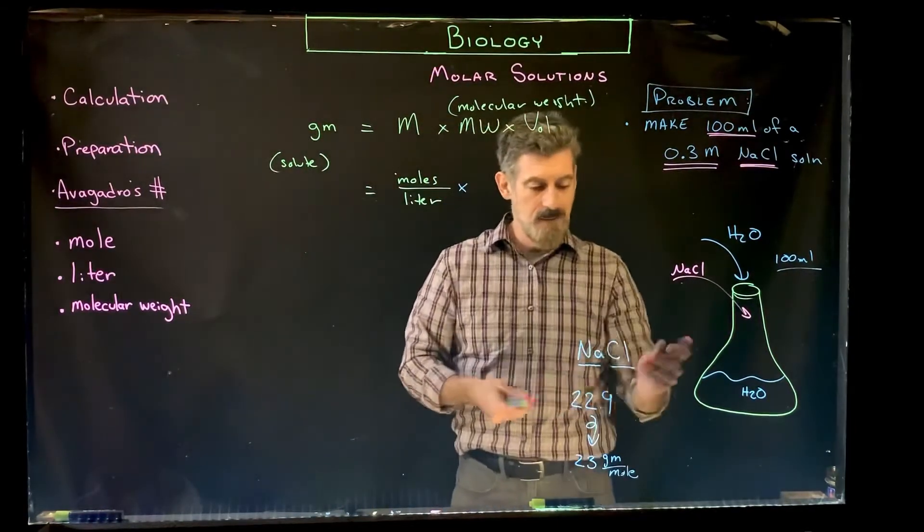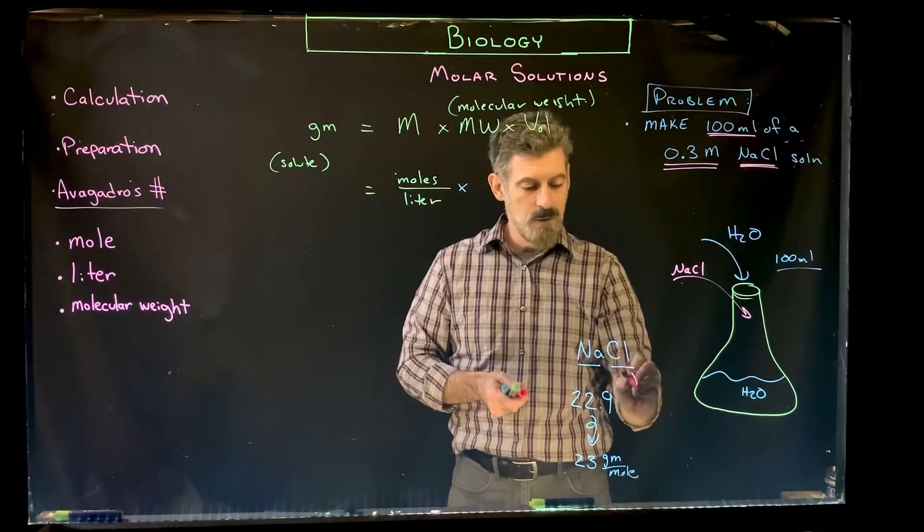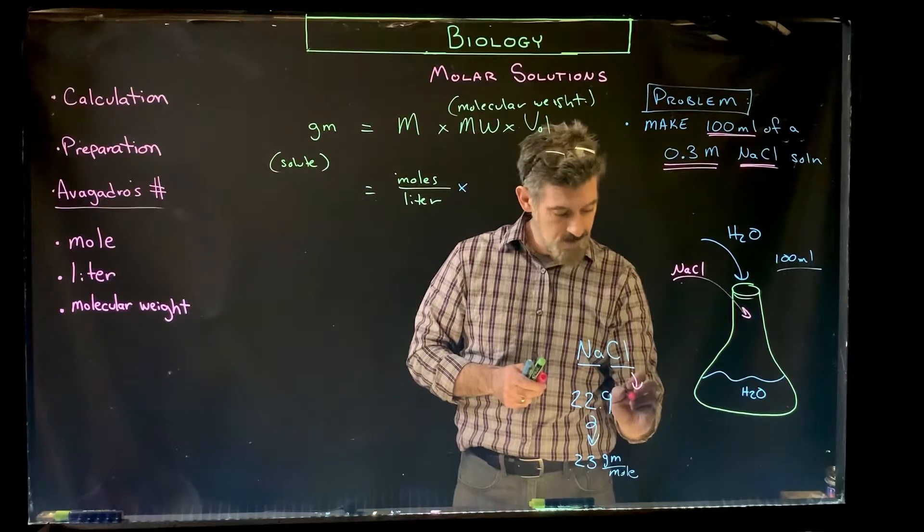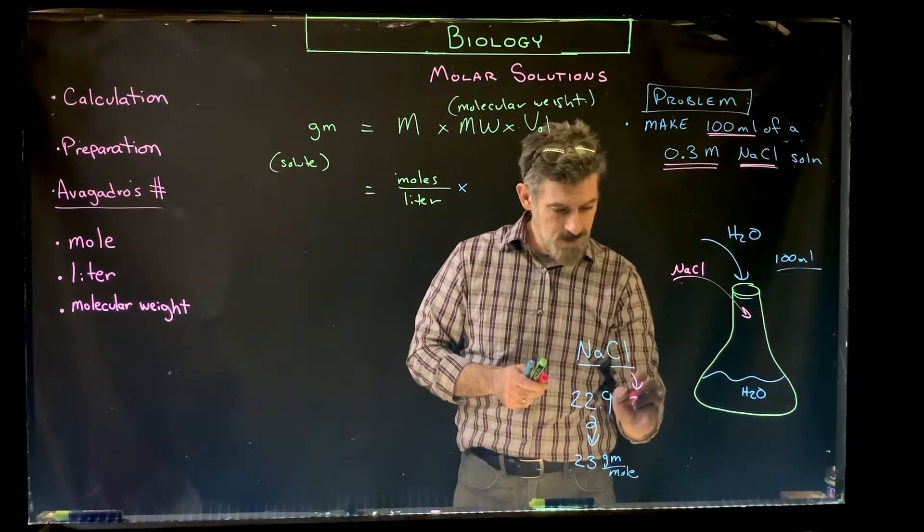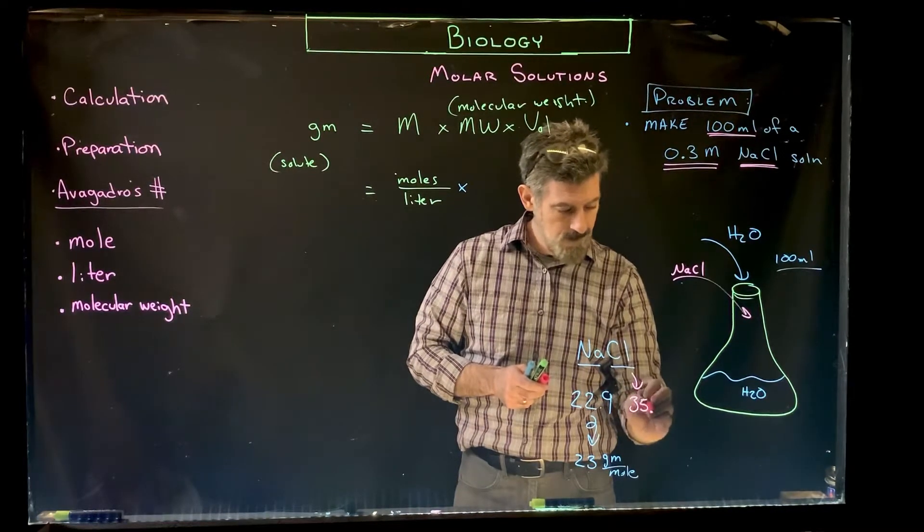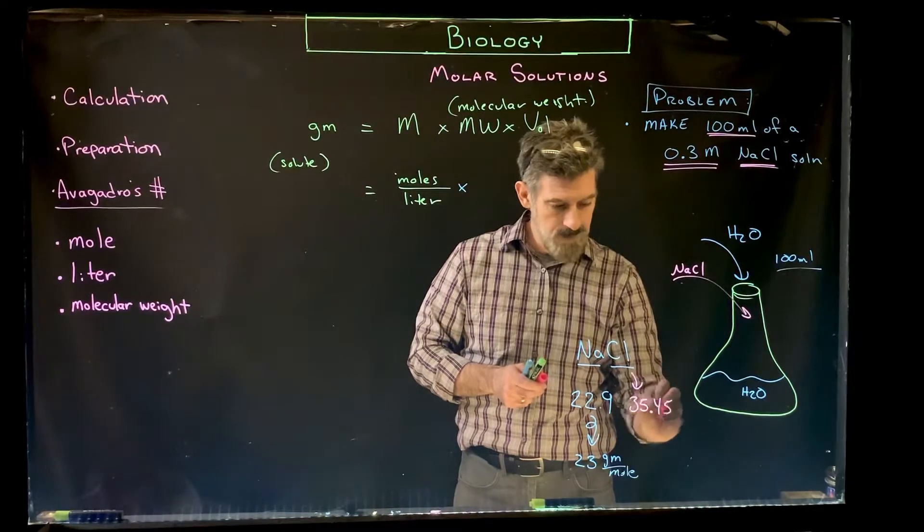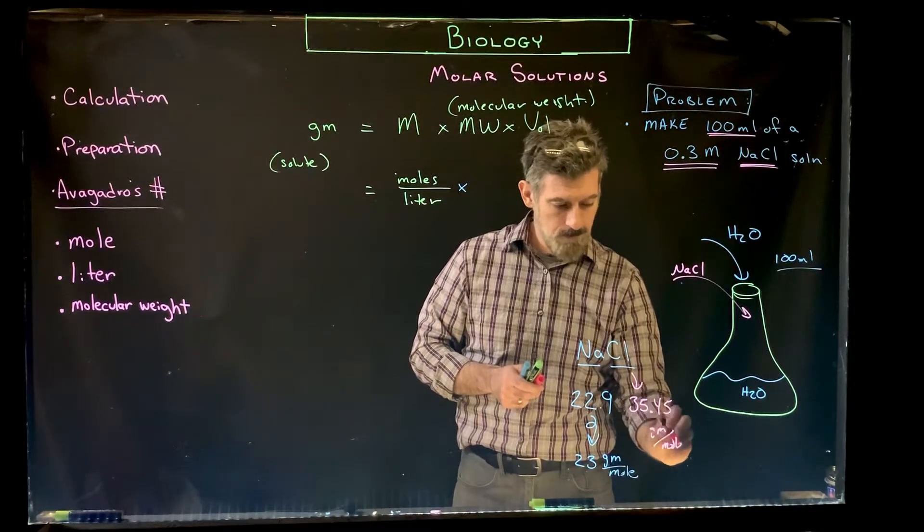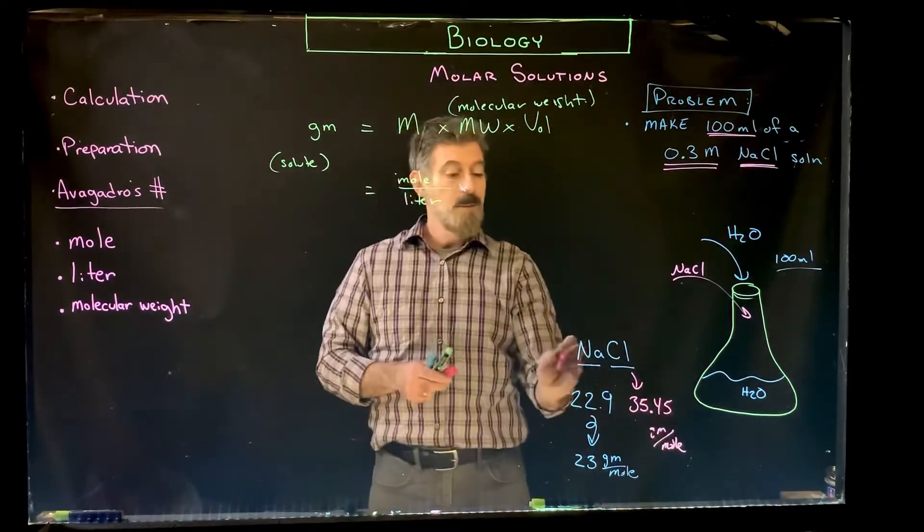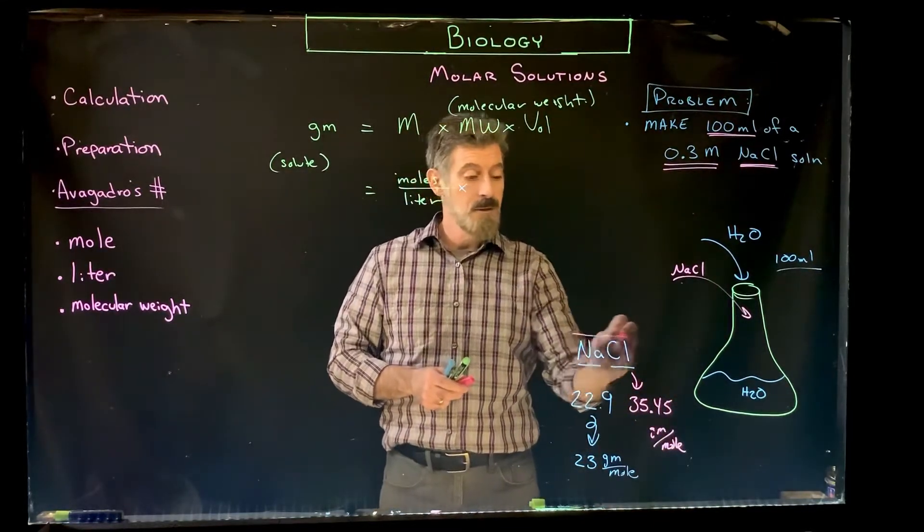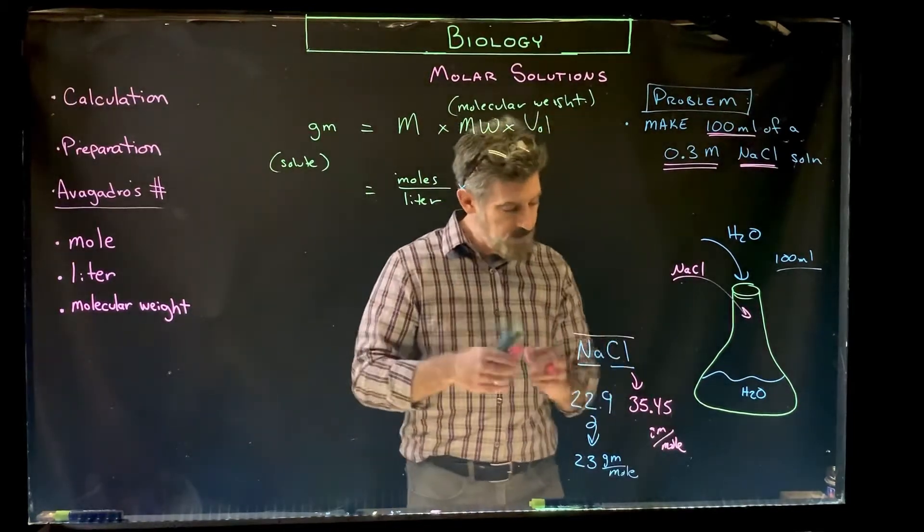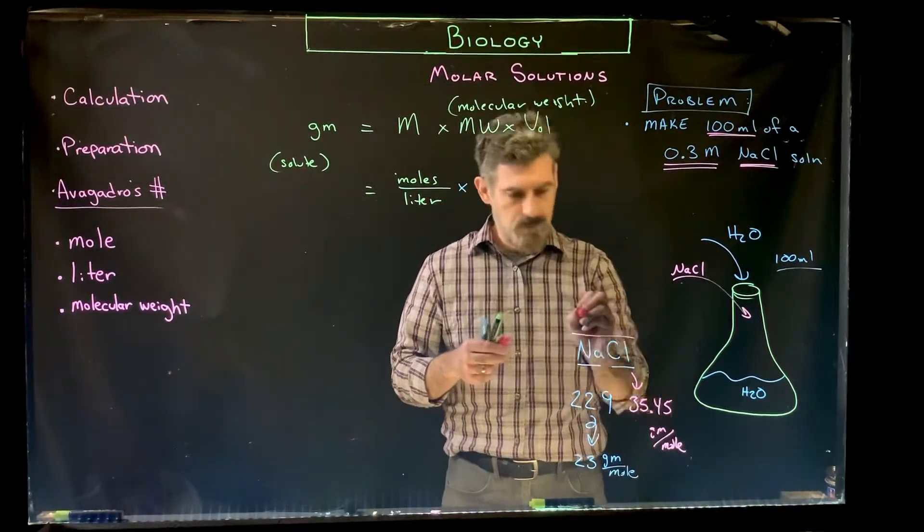But now let's say it's a molecule. There's two different types of elements here. There's also chlorine. Chlorine's atomic mass or atomic weight here is going to be 35.45. And that's the same thing, grams per mole. So if we put them together, for sodium chloride, we add them up, we'll have 58.4.